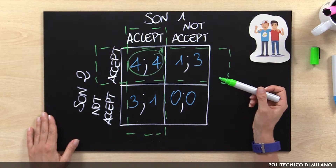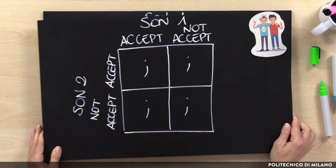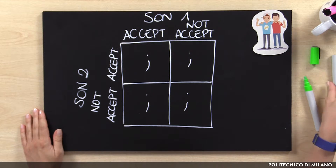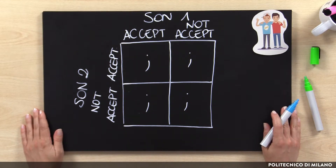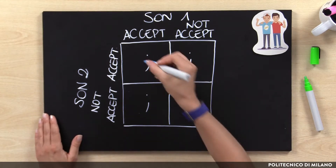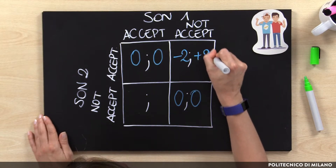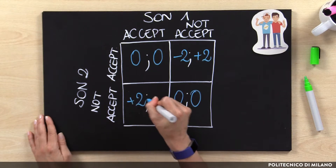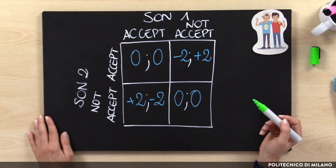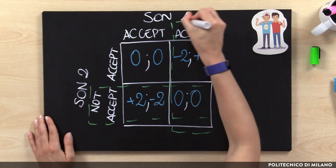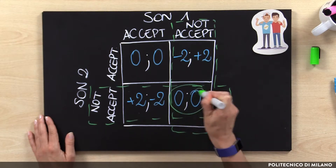If we look at the problem with this new perspective, the payoff matrix is totally different. We are now going to fill in the payoff matrix considering the differential money achieved in relation to the brother. The value is zero when both brothers accept and also when both do not accept. On the contrary, the value is plus 2 for Son 1 and minus 2 for Son 2 when Son 1 is not accepting but Son 2 is accepting, and vice versa. In this case, not accepting is the dominant alternative for both brothers, and is thereby also the Nash solution as well as an efficient solution.